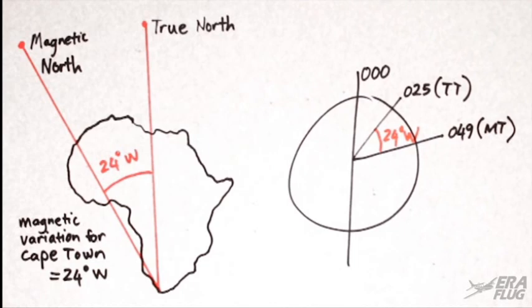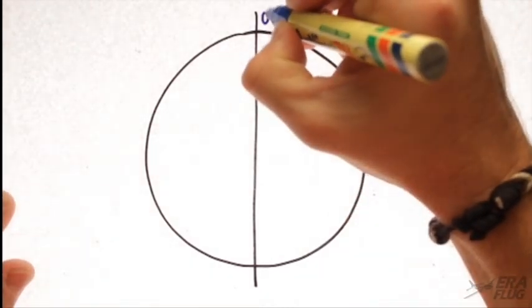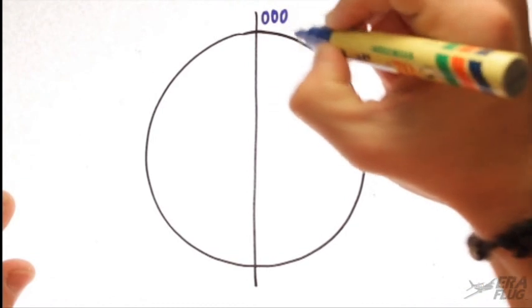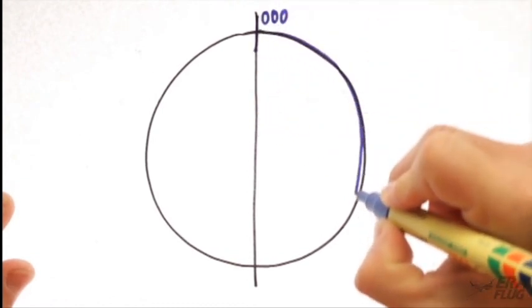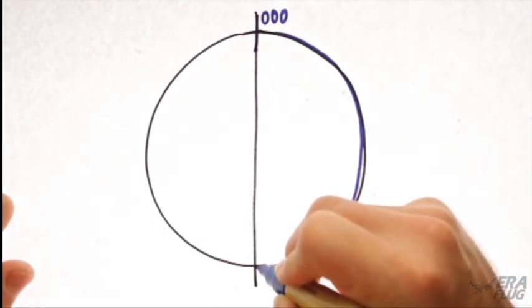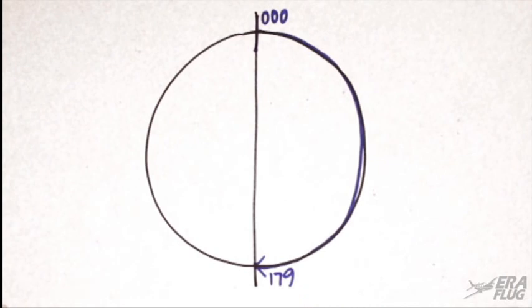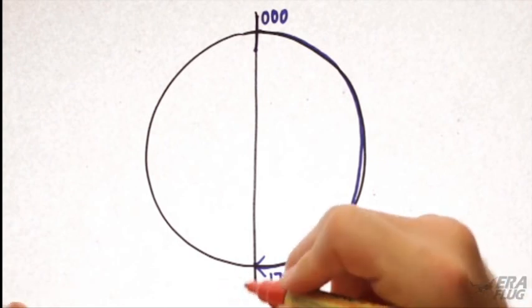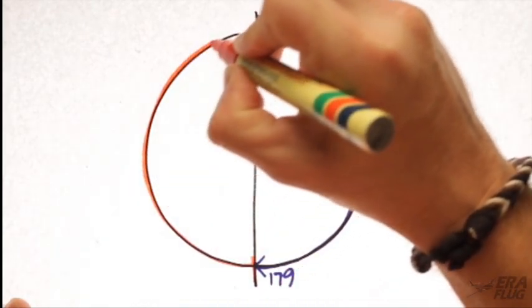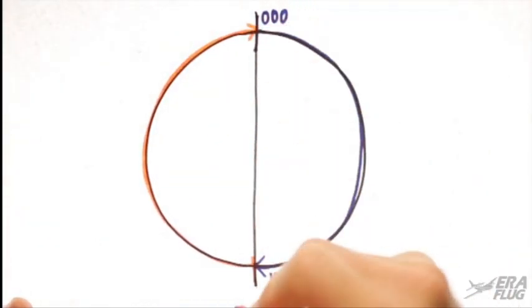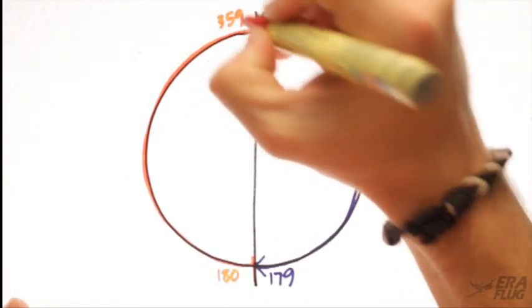The semicircular rule is a method used to separate aircraft vertically. In a circle, we measure degrees clockwise, starting from zero through to 360 degrees. We'll split the circle into two equal parts with a straight line and number the first sector from zero through to 179, and the second from 180 to 359.